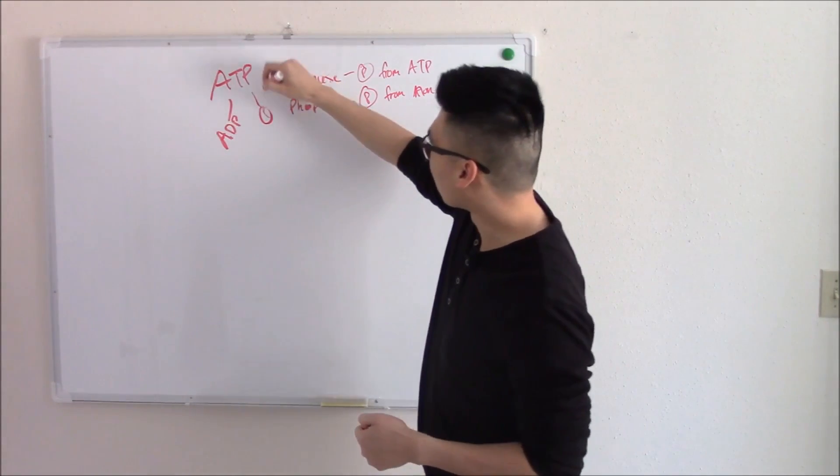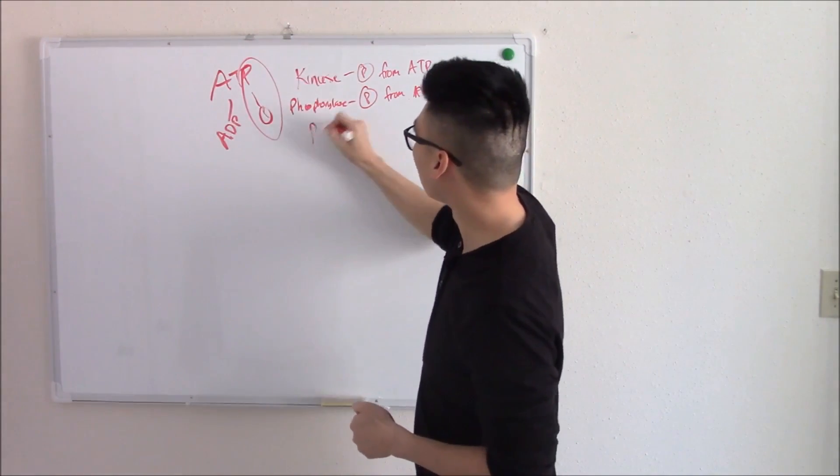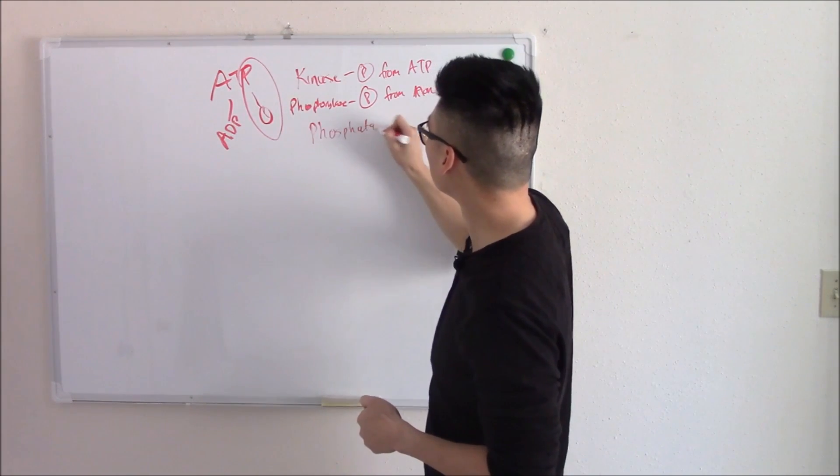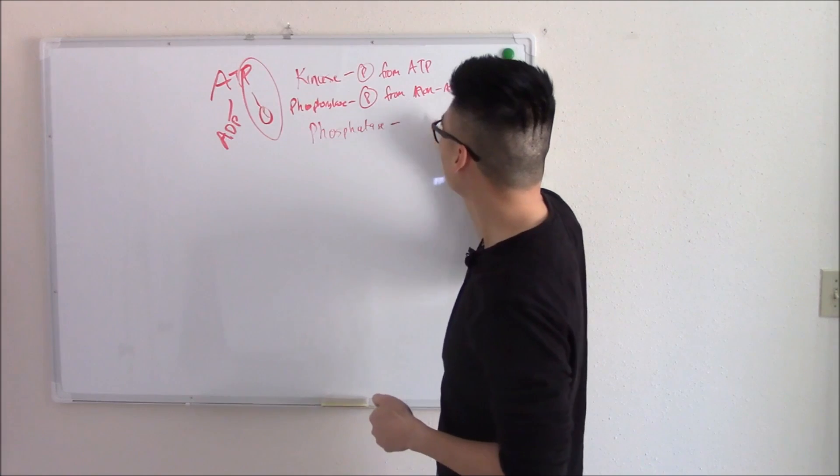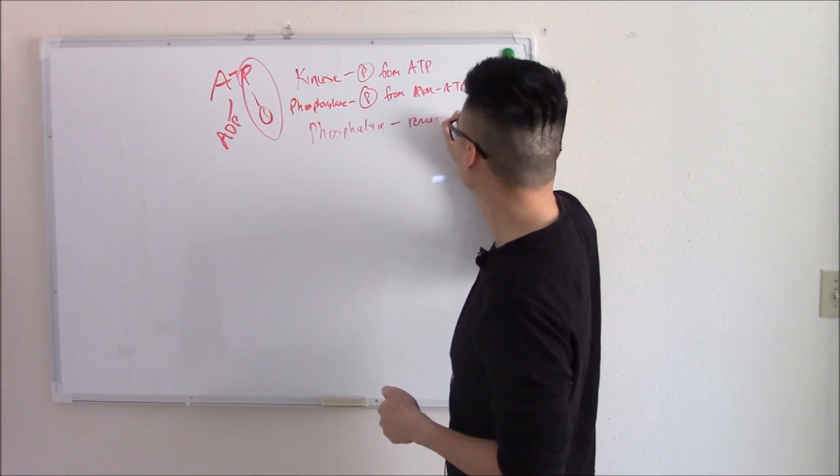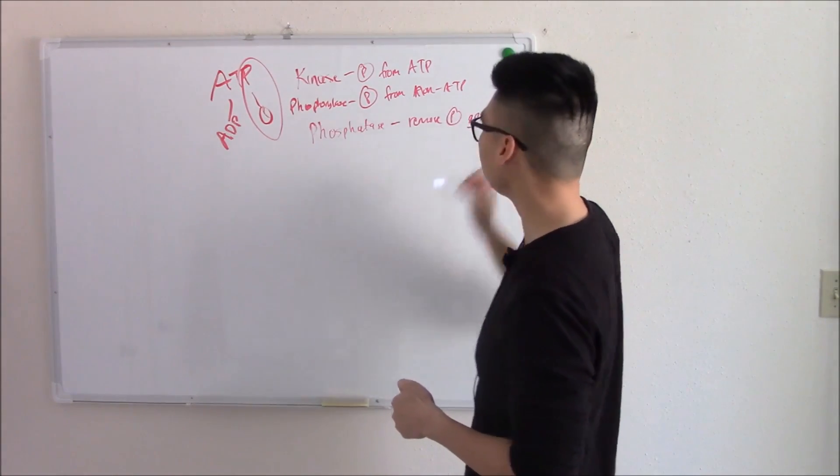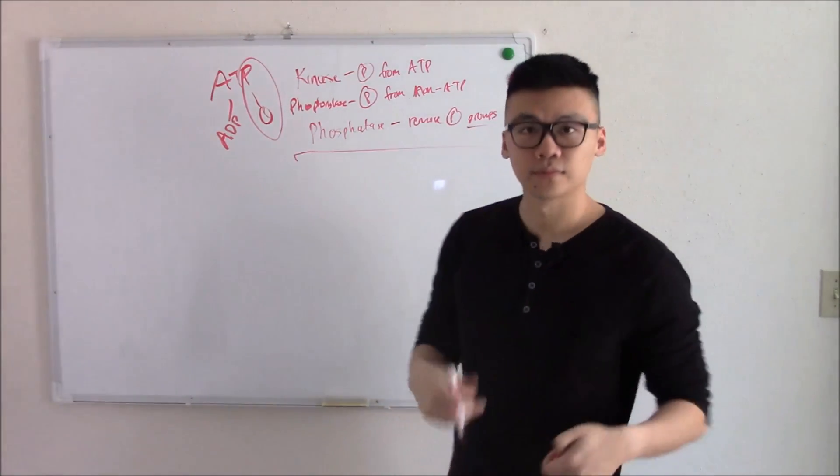And the thing that broke phosphate off in the first place, those are your phosphatases. Those remove phosphate groups. Got that?